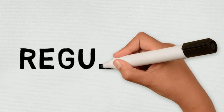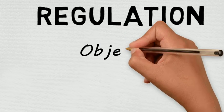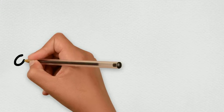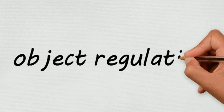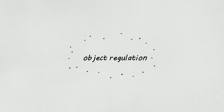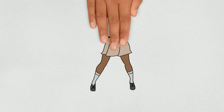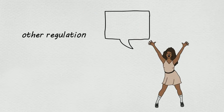In sociocultural theory, an important term is regulation and uses three main types: object, other, or self. For example, this videocast is a type of object regulation as it uses images and animation to help with comprehension of the topic. Other regulation, then, is mediation by people, such as teachers, who provide informational feedback.